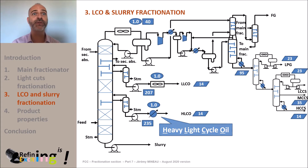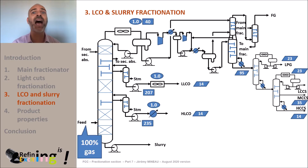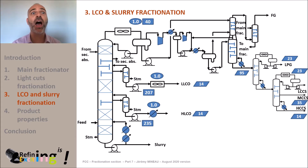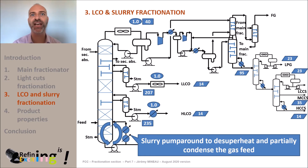As far as the slurry cut is concerned, there is a particularity in the FCC main fractionation tower. The feed from the reaction section enters the main fractionation tower in 100% gas form. This gas feed will be desuperheated and partially condensed with the use of a slurry pump-around. Indeed, a high amount of slurry is recirculated from the tower bottoms back to the tower; in between, this stream of slurry has been cooled down. This relatively cold liquid is then used to desuperheat the gas feed and condense the heavy part of this feed.